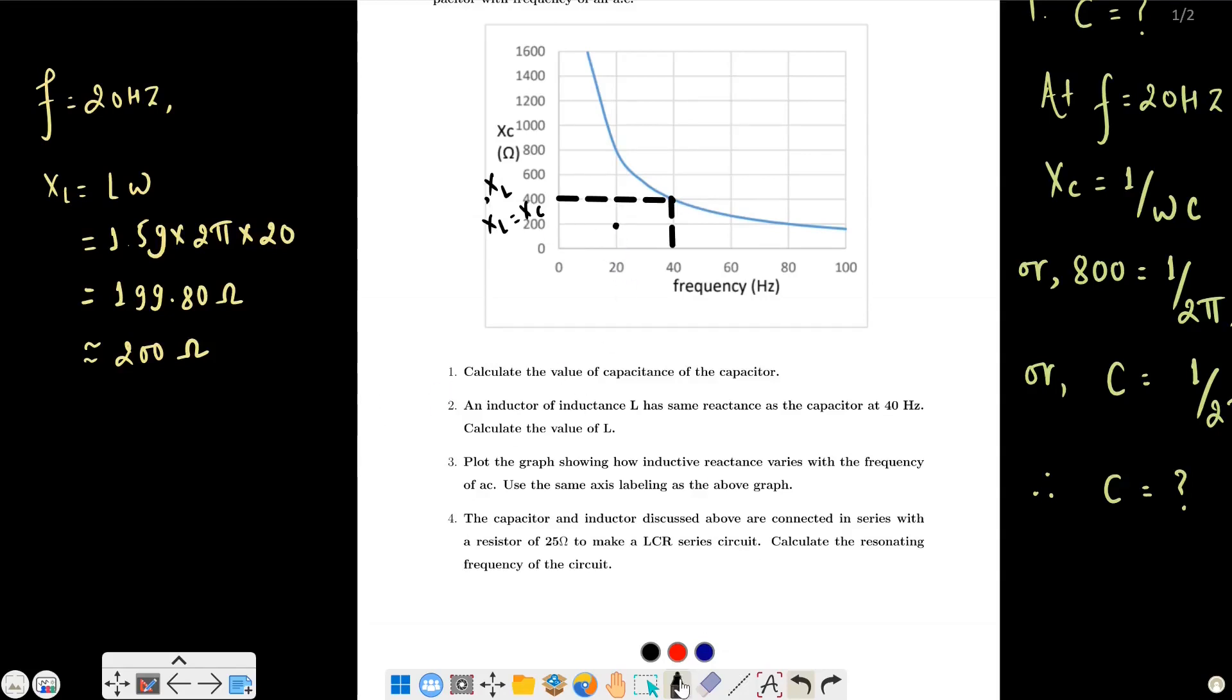At F equals 60 Hz, X_L equals L omega equals 1.59 into 2 pi into 60, which equals 597.59 ohms, nearly 600 ohms. So at 60 Hz it's 600 ohms.